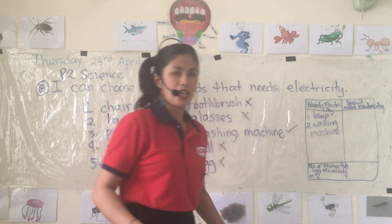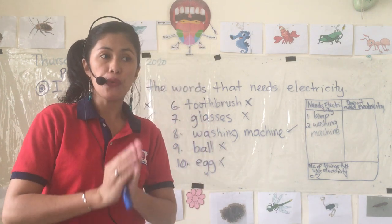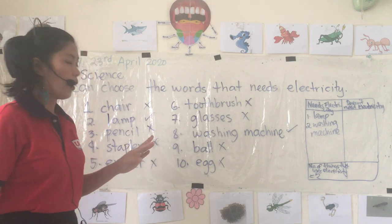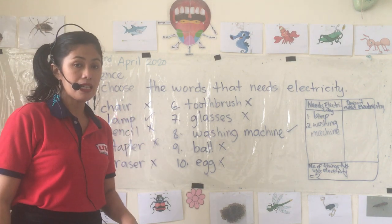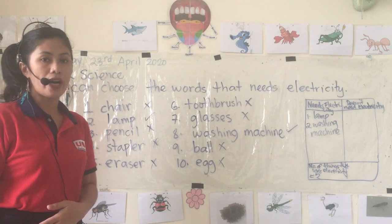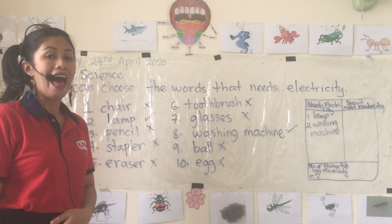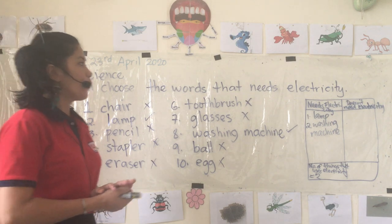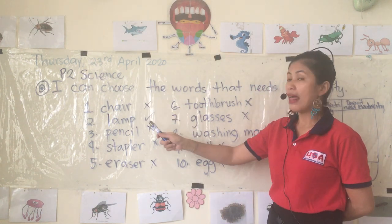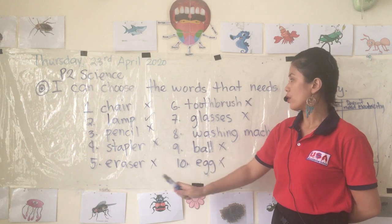All right, so later as I post this video, your assignment is that you are going to write down what are the things that need electricity, how many, and then how many don't.